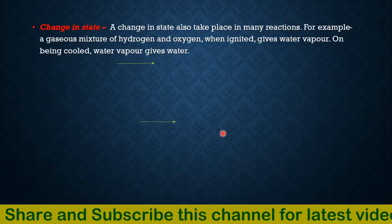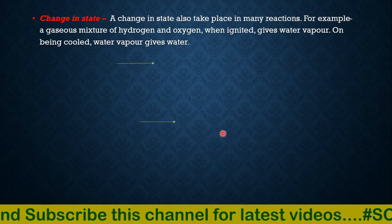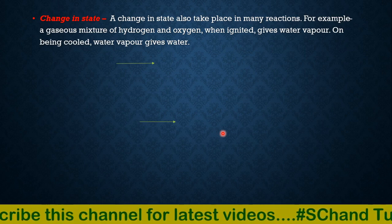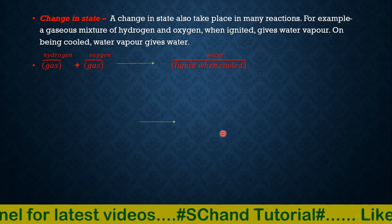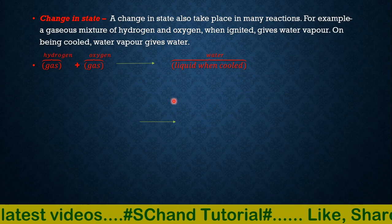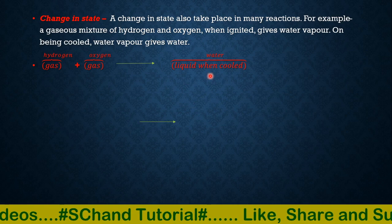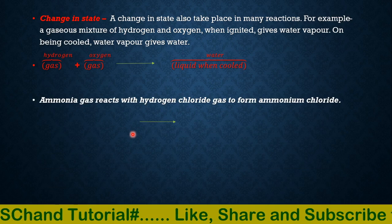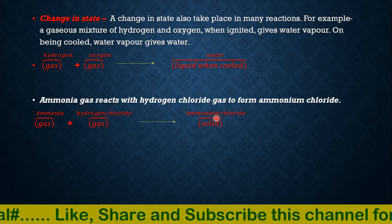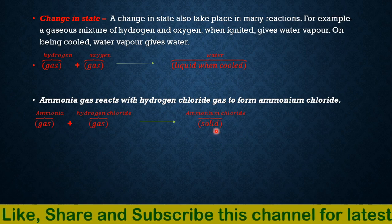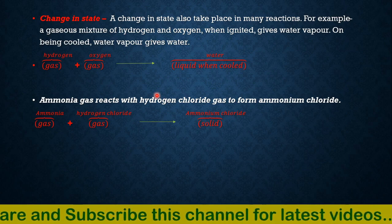The next characteristic is change in state. A change in state also takes place in many reactions. For example, a gaseous mixture of hydrogen and oxygen when ignited gives water vapor, and on being cooled the water vapor gives liquid water — both reactants were gases but the product is a liquid. Also, ammonia gas reacts with hydrogen chloride gas to form ammonium chloride, which is a solid — so there is a change in state. These are all the characteristics of chemical reactions. In the next video we will discuss the question answers of this chapter. Thank you.